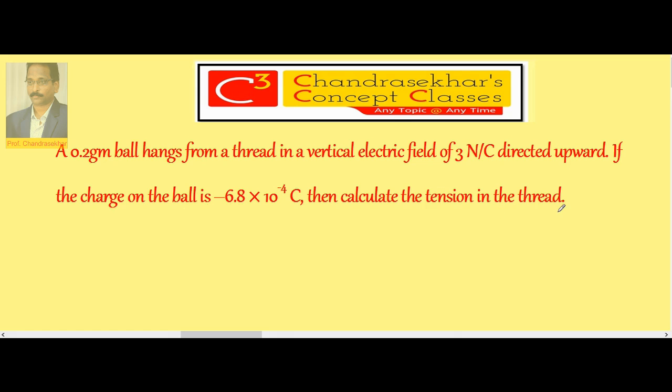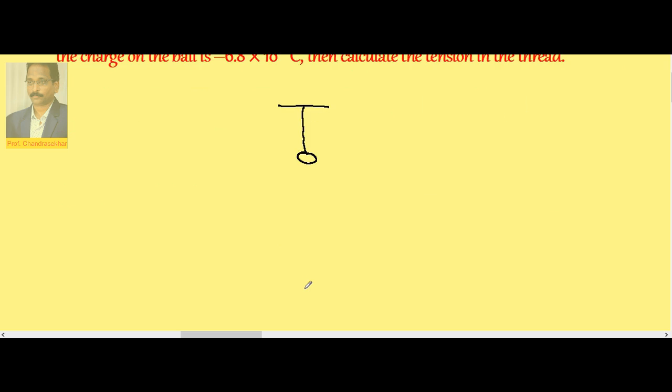Here, the ball is suspended with the help of a thread like this. Now the weight of the ball mg acts vertically down, tension in the string always towards the fixed point. So normally T equals mg, but here the ball carries a charge.